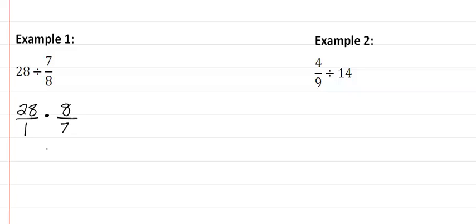Now I notice that I have a common factor between 28 and 7, so I'm going to reduce that. 7 divided by 7 is 1. 28 divided by 7 is 4. Then multiply, we get 32 over 1.